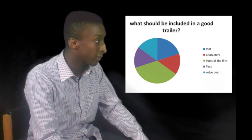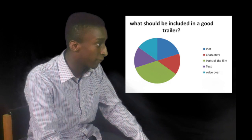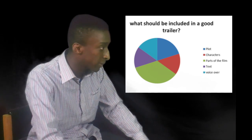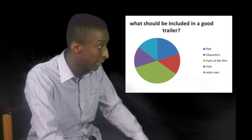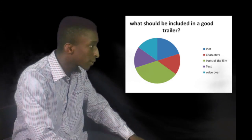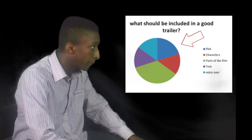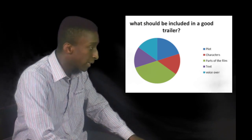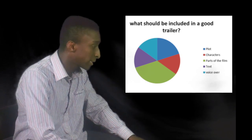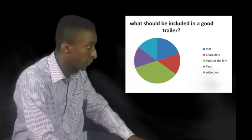The results came out as such. Six people said that the parts of the film should be included in the trailer, which was expected because it allows the audience to know what the film is about. The lowest score was split into three: the voiceover, the character, and the plot. This was to be expected as it is a teaser trailer, meaning it is not supposed to give away the character, the plot, and sometimes the voiceover gives it away.